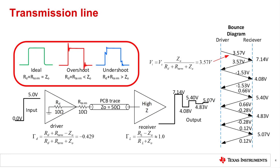If you did the same calculation with a matched impedance, you would not see any overshoot. If you used a very large termination resistance, you would see undershoot. Now let's take a look at a simple calculator that can automatically perform this calculation.